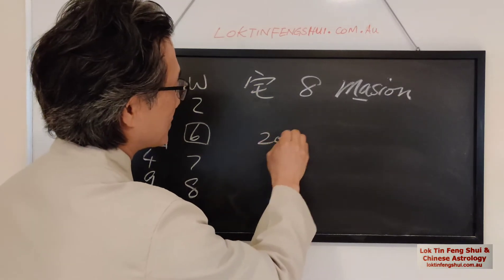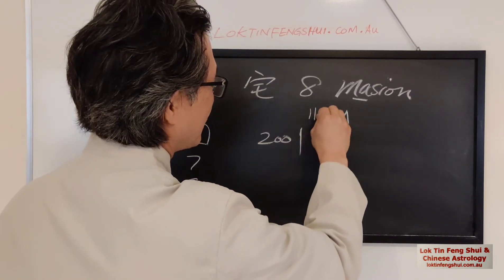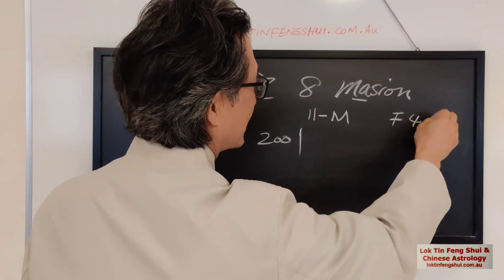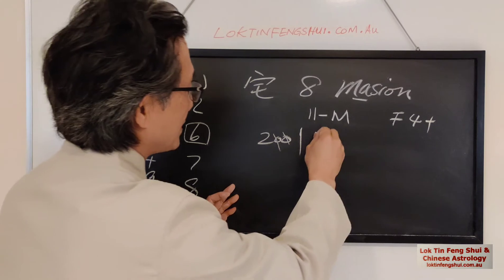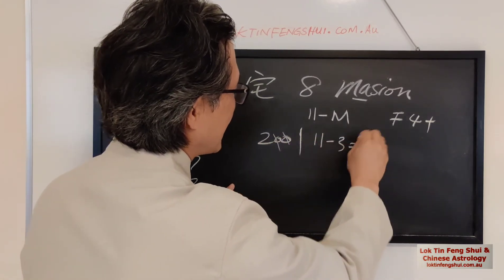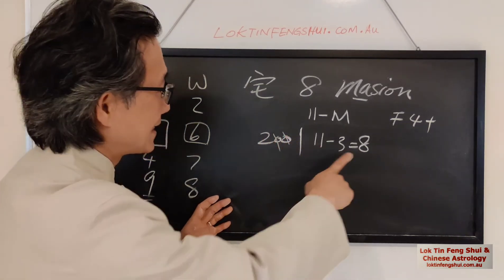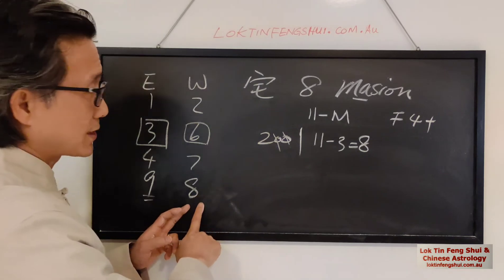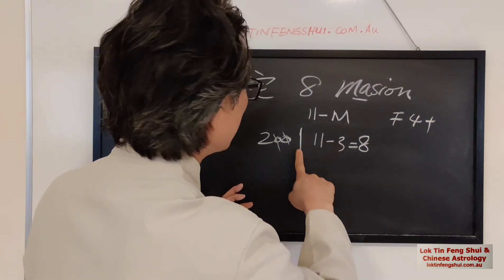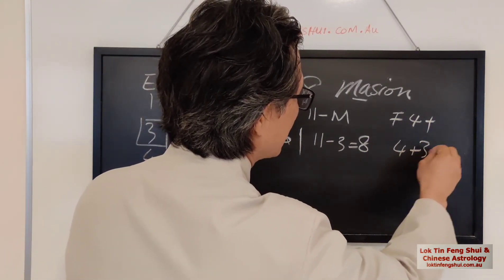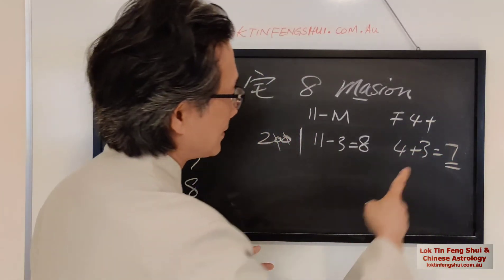Someone after 2000, same number apply, but you cancel out the zero. Let's do one example for you. So let's say someone born in 2001. For a male, remember, 11 minus, female 4 plus. So 2001, so cancel the zero, becomes three, right? So for 11 minus 3, become an 8. So this person, a male person born in 2001, is an 8. 8, which is the West group. So let's see what about the female. So female, that's three here again. So four plus three is seven. So become a seven.